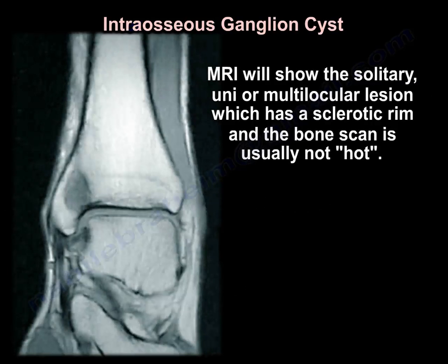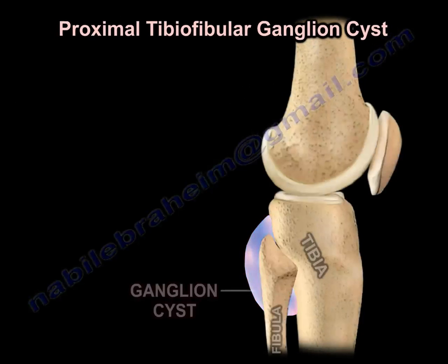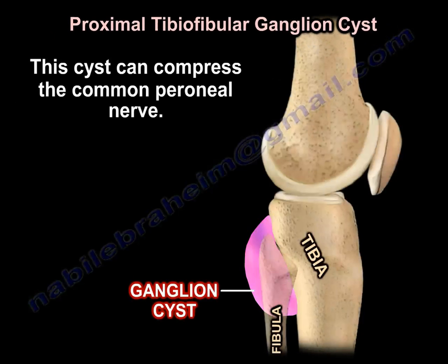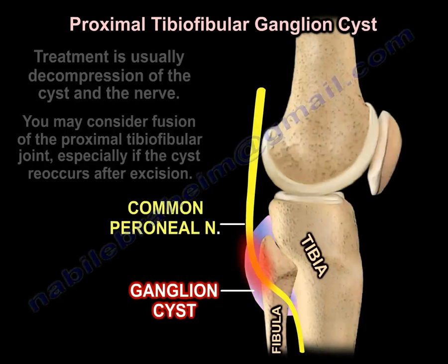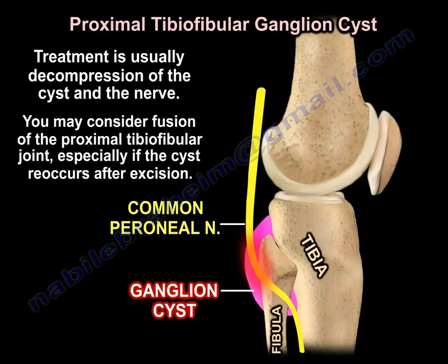On MRI, it will show a solitary uni- or multilocular lesion with a sclerotic rim, and the bone scan is usually not hot. Proximal tibia fibular cysts can compress the peroneal nerve. Treatment is usually decompression of the cyst and the nerve. Fusion of the proximal tibia fibular joint may be considered, especially if the cyst recurs after excision.